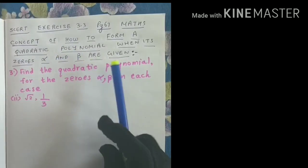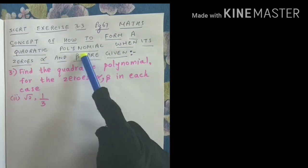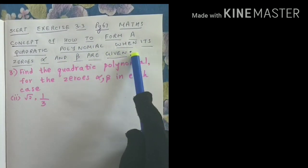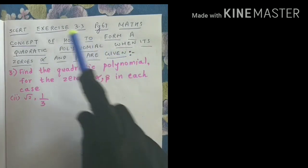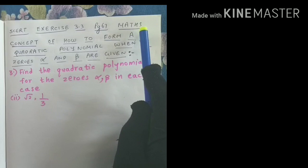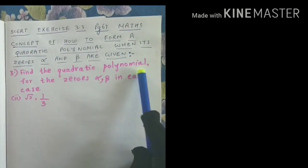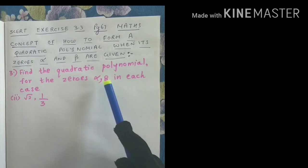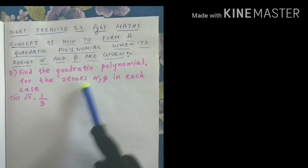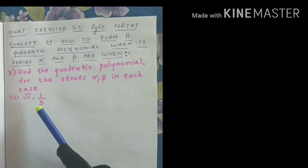Welcome to the next video. In this video we will discuss a concept on how to form a quadratic polynomial when its zeros alpha and beta are given. This problem is taken from exercise 3.3, which is on page number 67 of your maths SCERT textbook. The question is: find the quadratic polynomial for the given zeros alpha and beta in each case.